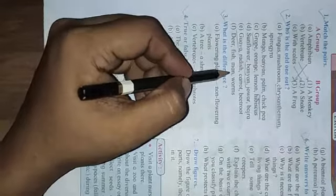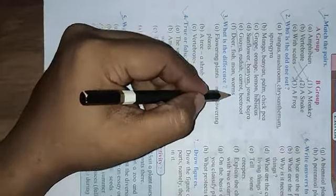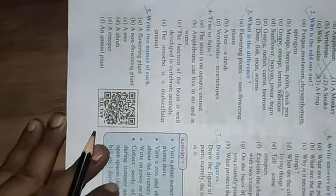Then deer, fish, man, worms. Here is what? Worms. Okay? This is what? Third one we will do afterwards. Now see.